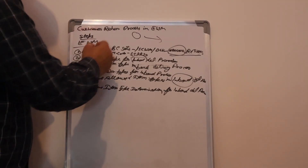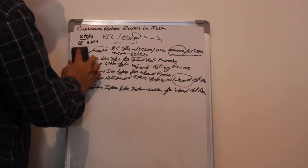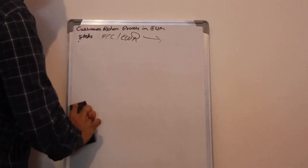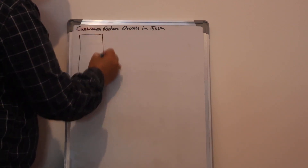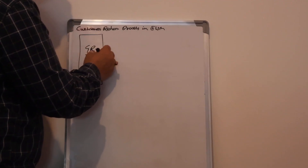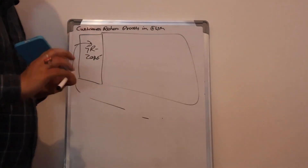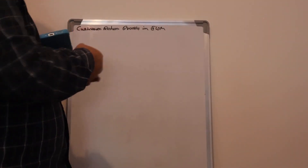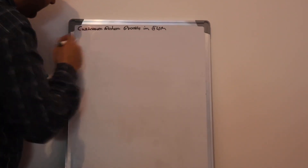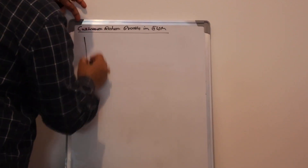These are the EWM configuration steps. So what we have learnt today covers both ECC side and EWM side configuration. Now, for example, after doing this configuration, our products have reached the GR zone — this is our warehouse. Now the customer has returned goods to us.